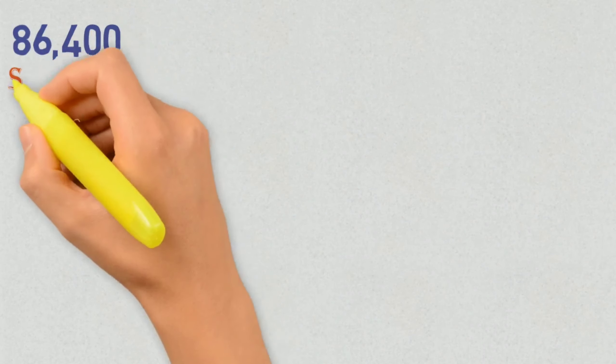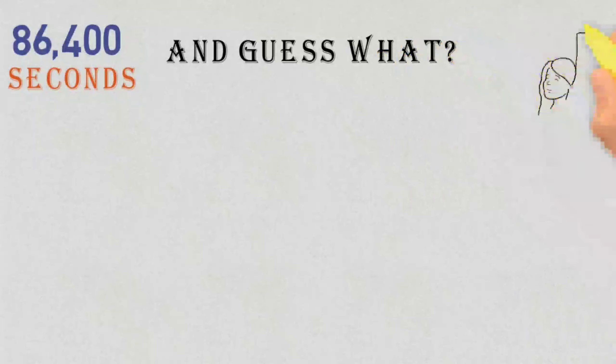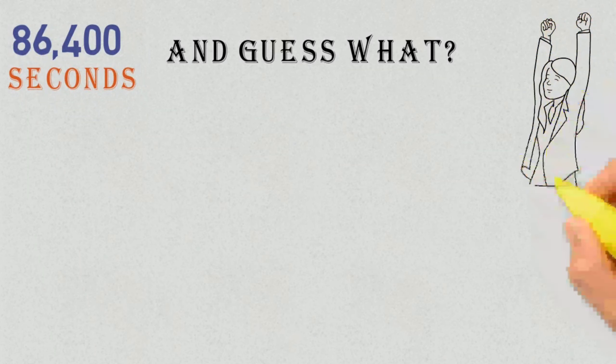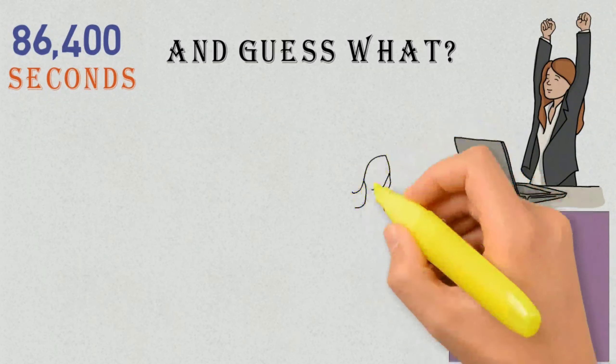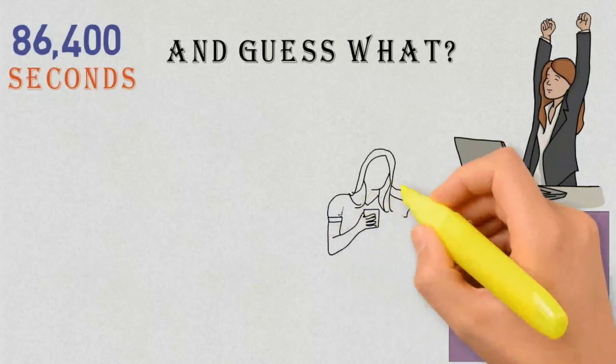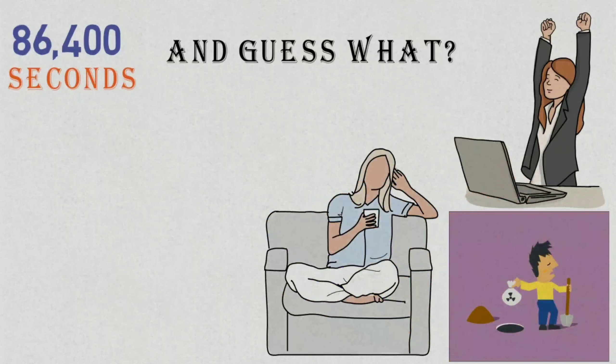You get 86,400 seconds every single day, and guess what? It all comes down to how you choose to spend yours, whether you use them productively or waste them. That's your choice. How many times do you go through the course of the day and realize that you didn't do anything you should have done?